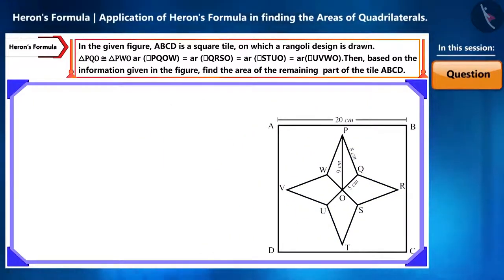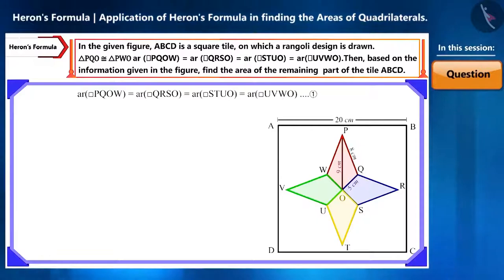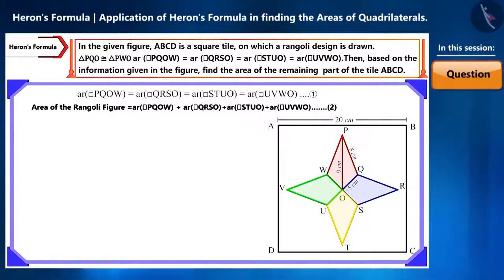Friends, look at the figure carefully. We are given that the area of all these four quadrilaterals is equal. Let's call it equation 1. And you can see in the figure that the rangoli is formed by joining all these four quadrilaterals. So by adding the areas of all these quadrilaterals, we will get the area of the rangoli. Let's call it equation 2.